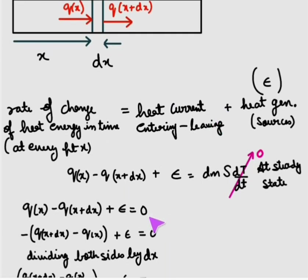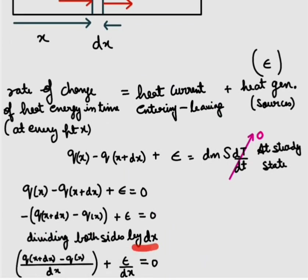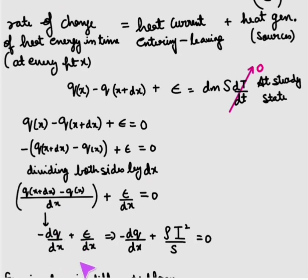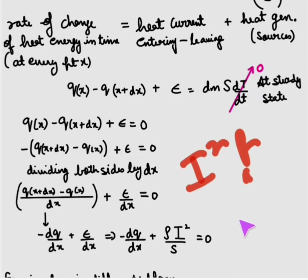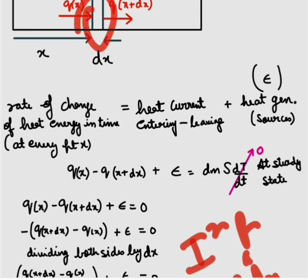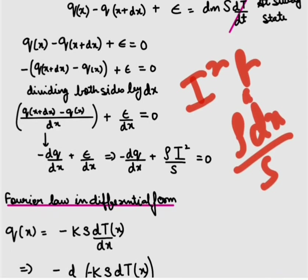Rearranging terms and dividing both sides by dx gives: -dQ/dx + E/dx = 0. We can substitute E, which is the electric power I²R, where R = rho·dx/A is the resistance of the small differential element. This gives: -dQ/dx + rho·I²/s = 0.